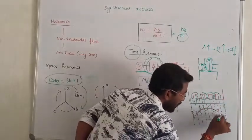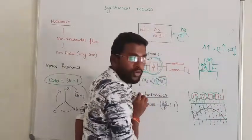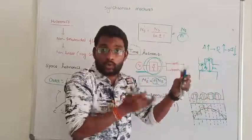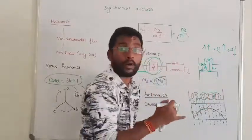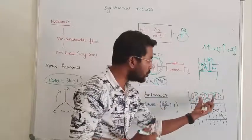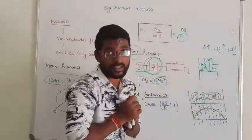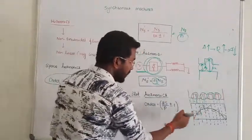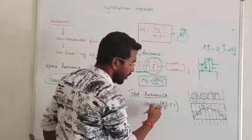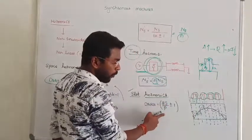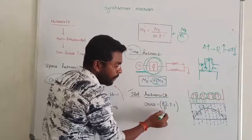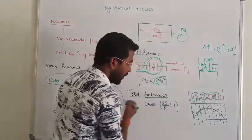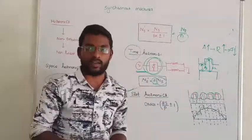This is a pure sinusoidal waveform. Due to non-uniformity — the stator having slots and the rotor being non-uniform — the flux becomes non-sinusoidal. So in this case, the order of harmonics for slot harmonics is given by twice the number of slots divided by number of poles, plus or minus 1. That is, twice slots per pole. Take the total number of slots divided by number of poles to get the order of the slot harmonics.